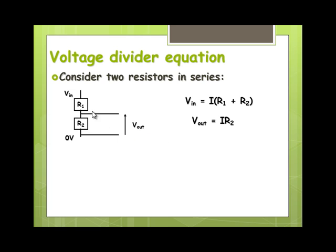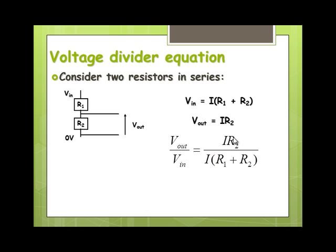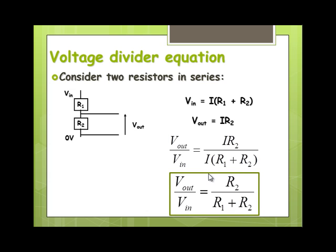V_out — that is, the voltage across R2 — is simply equal to the current through times that resistance. So if we take the ratio of V_out over V_in, we get IR2 over I(R1 + R2). The I's cancel out, giving us what we call the voltage divider equation.